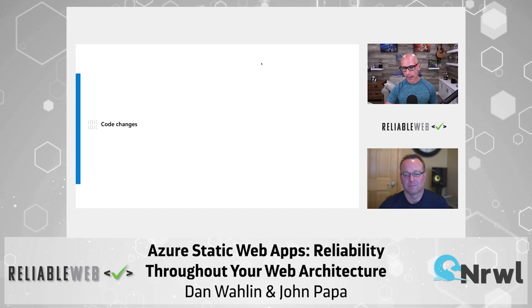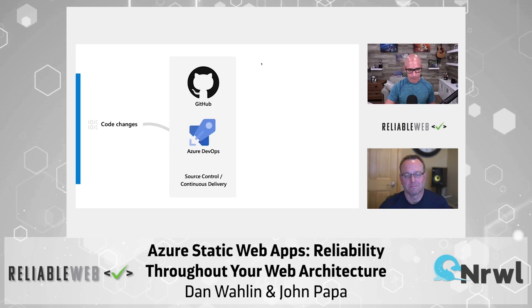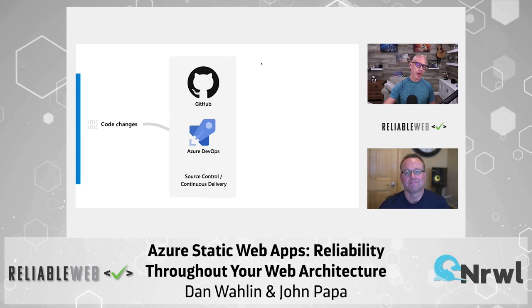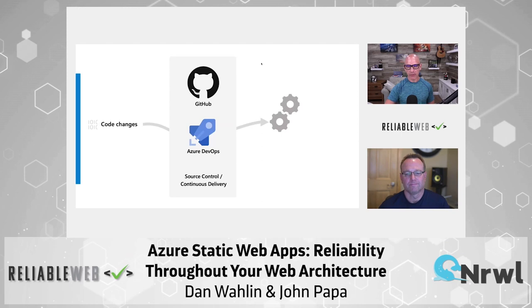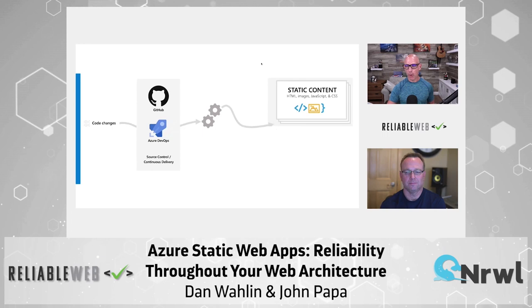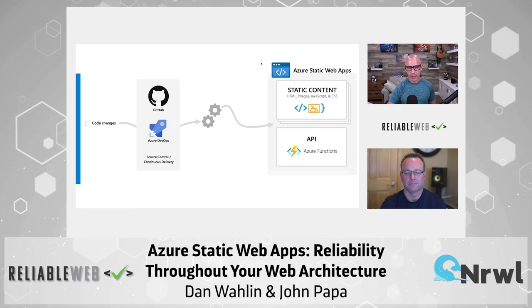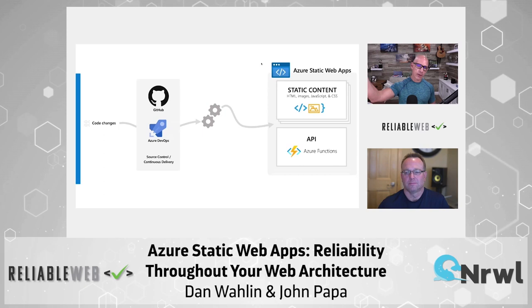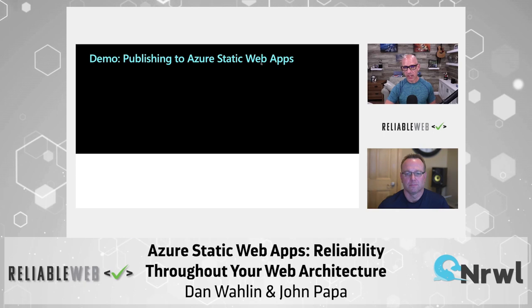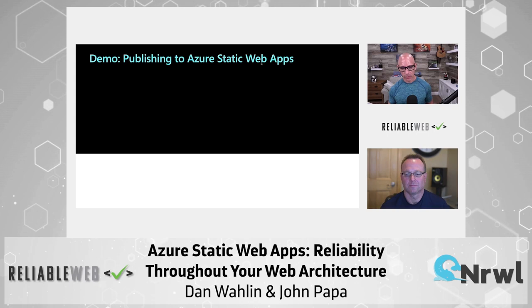Let's do a visual. You write code, you make code changes, and then you push them somewhere — maybe GitHub, maybe Azure DevOps, some kind of source control or continuous delivery mechanism. What Azure Static Web Apps is going to do is take that, build your code, and deploy the static content — the fancy way of saying your HTML, your images, your fonts, your JavaScript — and it's going to deploy your functions if you have those. Those things are your web app going out to global scale around the world with multiple points of presence on the CDN, which connects you with your customers. I think it's time to actually show people.